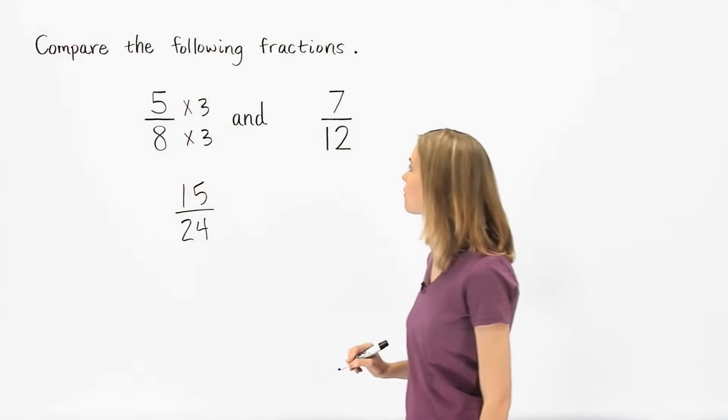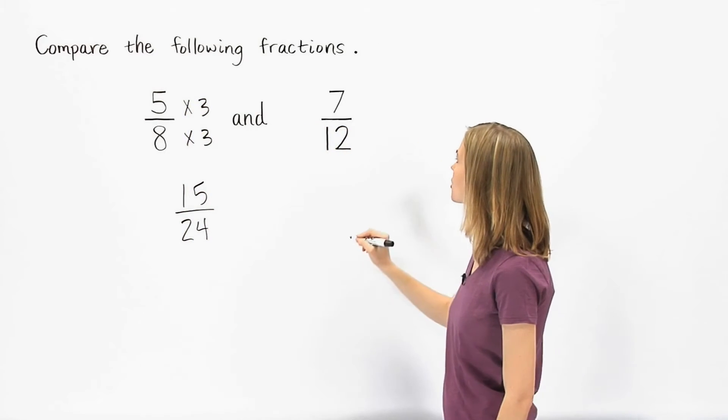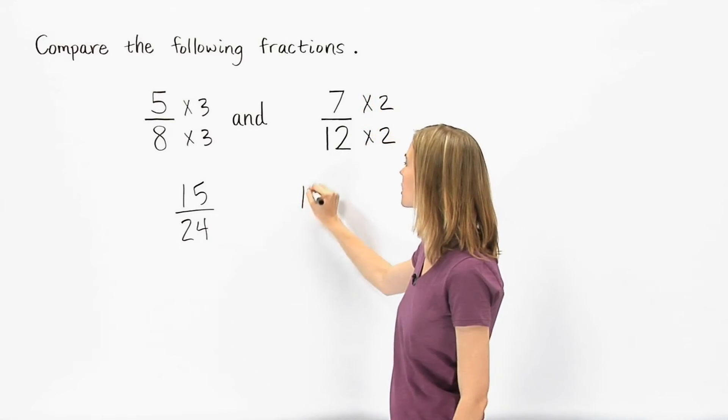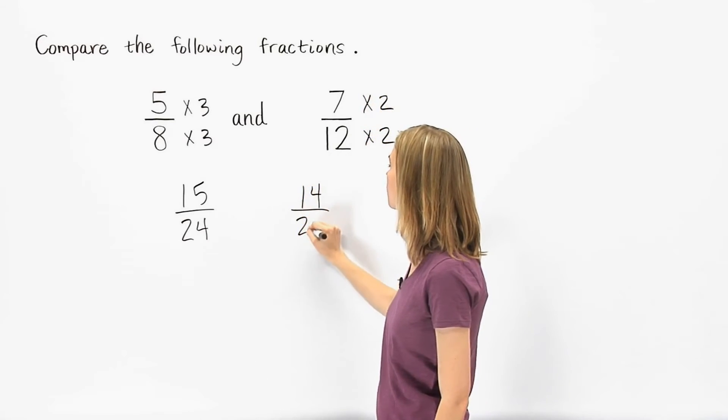To get 24 in the denominator of the second fraction, we multiply the numerator and denominator by 2, to get 14 over 24.